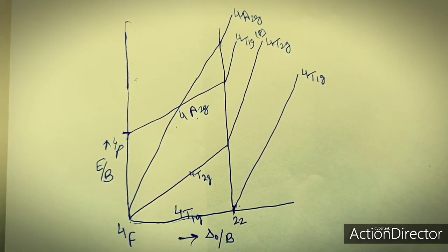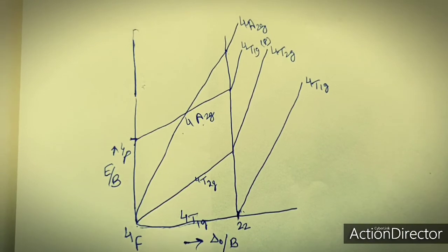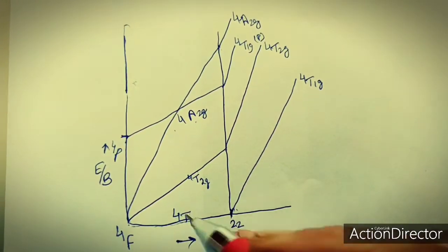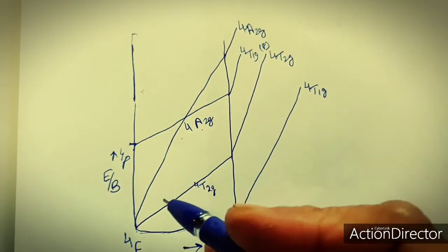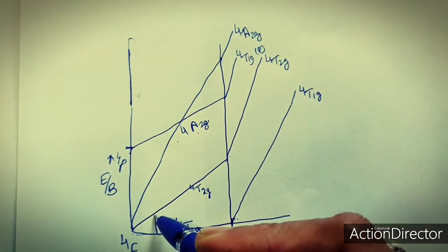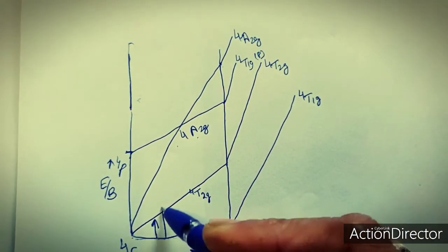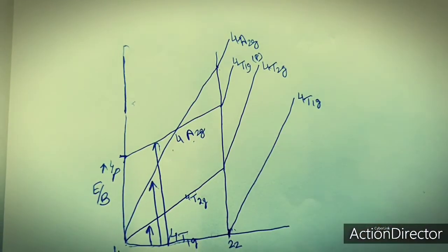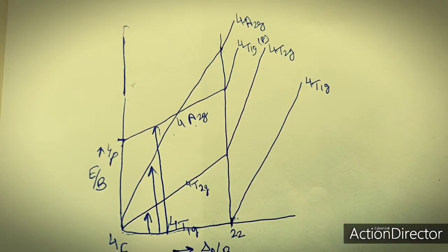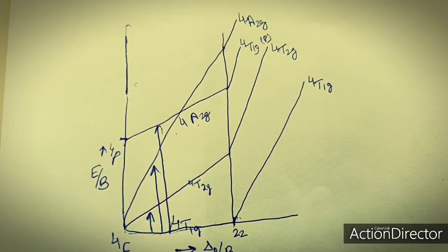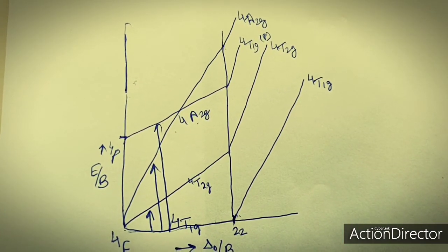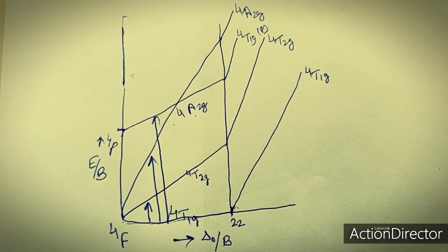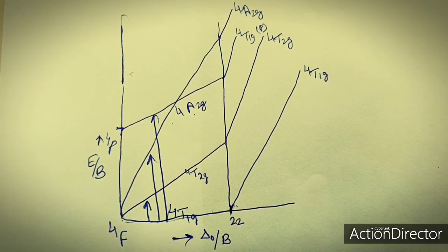On the left side we can see that there may be three transitions possible: first, second, and third. So three peaks will be observed in the electronic spectra of a weak field D7 configuration complex.